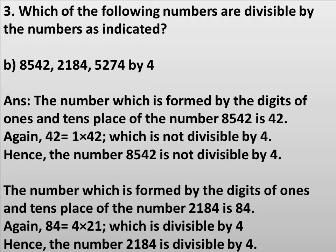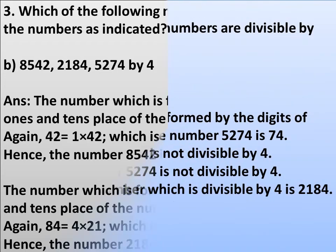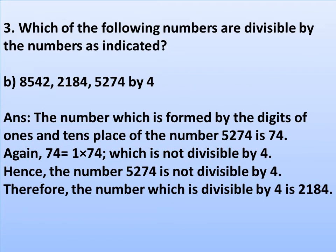For 8542, the last two digits form 42. Since 42 = 1 × 42, it is not divisible by 4, hence 8542 is not divisible by 4. For 2184, the last two digits form 84. Since 84 = 4 × 21, it is divisible by 4, hence 2184 is divisible by 4. For 5274, the last two digits form 74. Since 74 = 1 × 74, it is not divisible by 4, hence 5274 is not divisible by 4. Therefore, the number divisible by 4 is 2184.